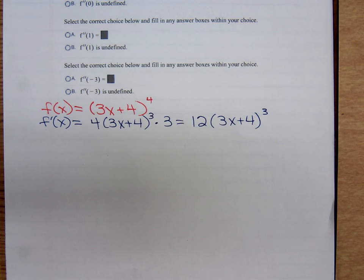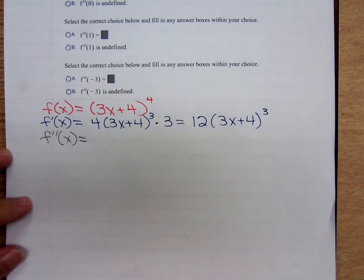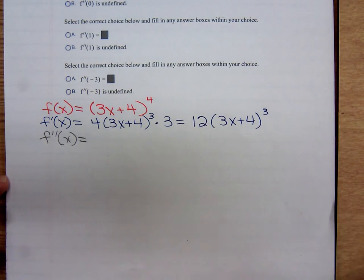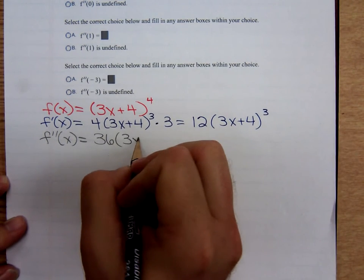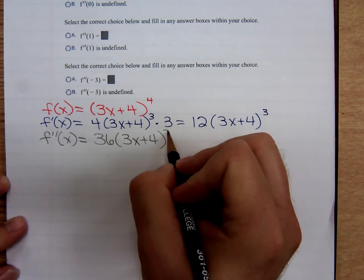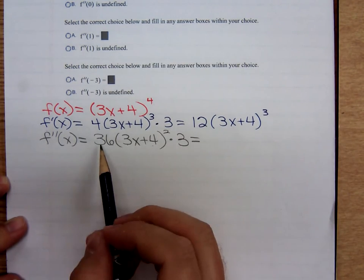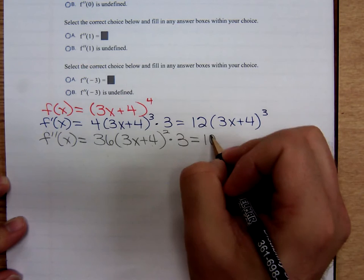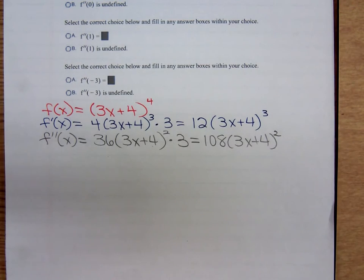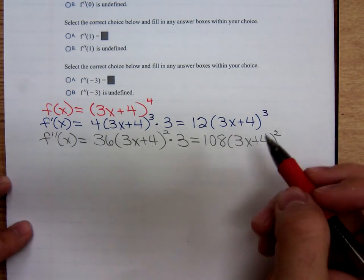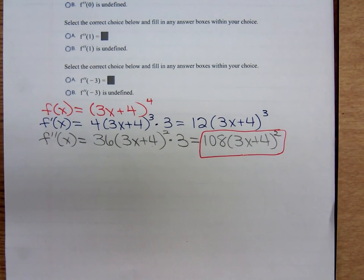Now we're ready to find f double prime of x. Use the generalized power rule again. 3 times 12 is 36, times (3x + 4) squared, times the derivative of the inside function, which is still 3. 36 times 3 gives me 108, times (3x + 4) squared. And there's my answer for the second derivative in terms of x.